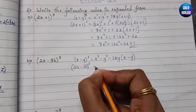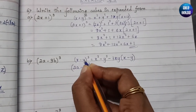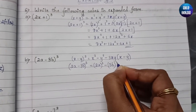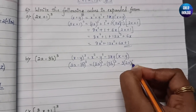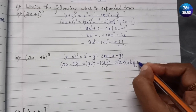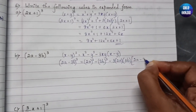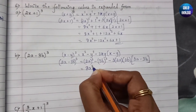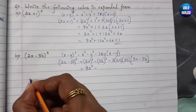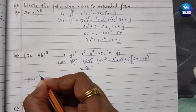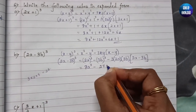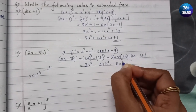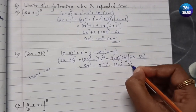Here x = 2a and y = 3b. Substituting: (2a)³ − (3b)³ − 3 × (2a) × (3b) × (2a − 3b). Now 2³ = 8, so (2a)³ = 8a³. And 3³ = 27, so (3b)³ = 27b³. Then 3 × 2a × 3b = 18ab, multiplied by (2a − 3b).